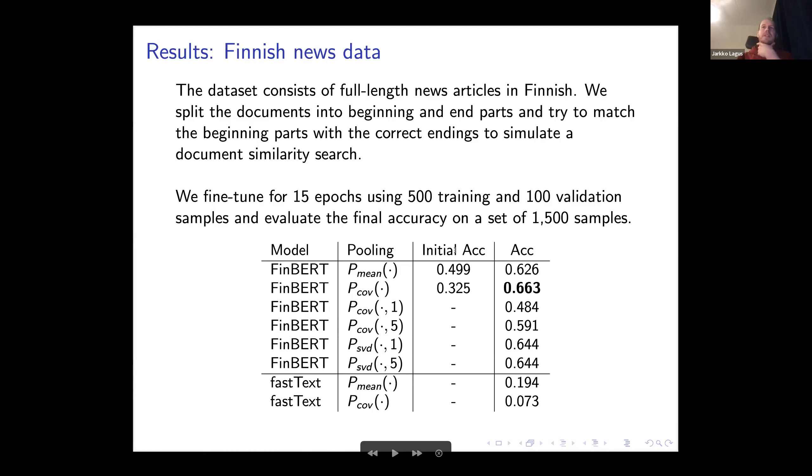Here's the initial accuracy with no training for the embedding model. The covariance is actually worse in the beginning, but after training we reach higher scores. The low rank representations do not do as well as the full covariance, but they still are better than the mean. The FastText seems to collapse in matching those documents. Interestingly, for FastText the mean is much better than the covariance, but still very far from the transformer-based, which makes sense since you don't train these embeddings.